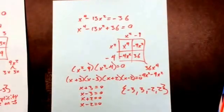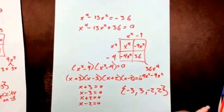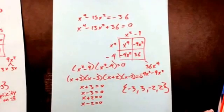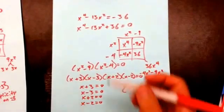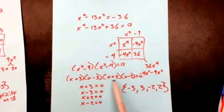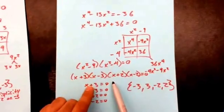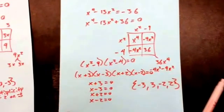On these problems you've got to go multiple steps. On this one I had to factor twice — once with the box method, then again using difference of two squares. A lot of times you're going to have to go multiple steps, so be careful.